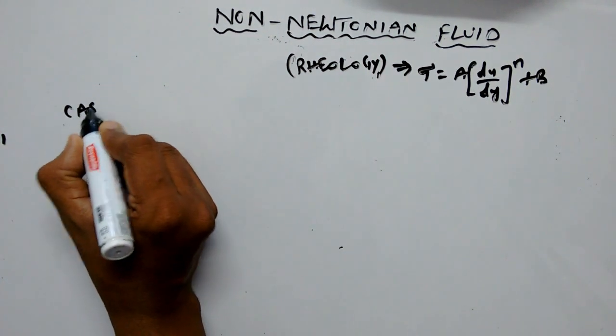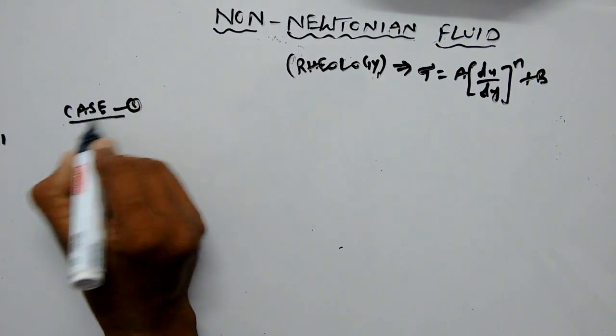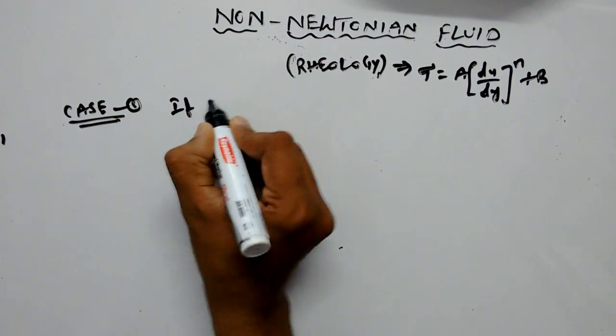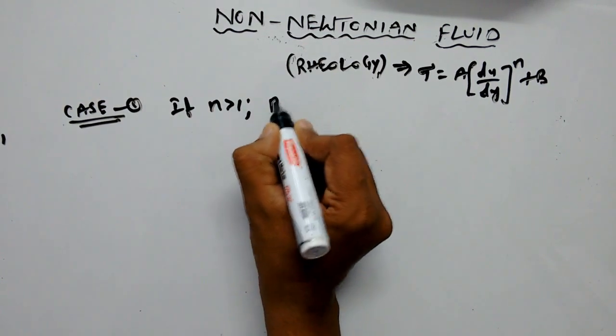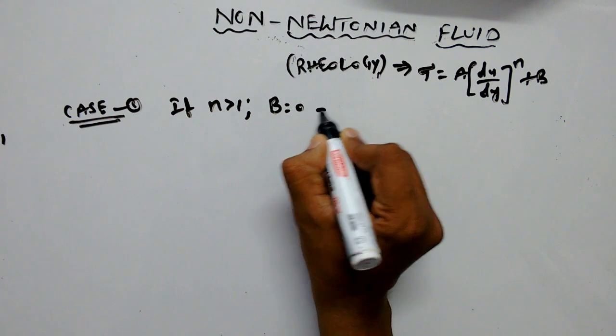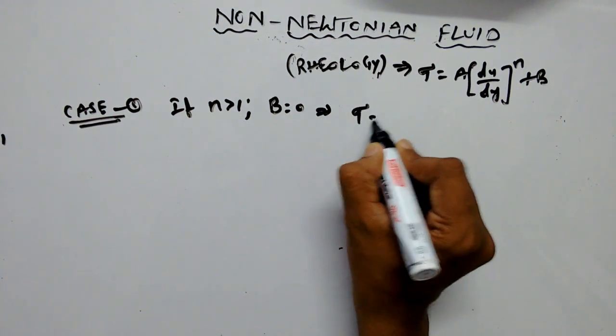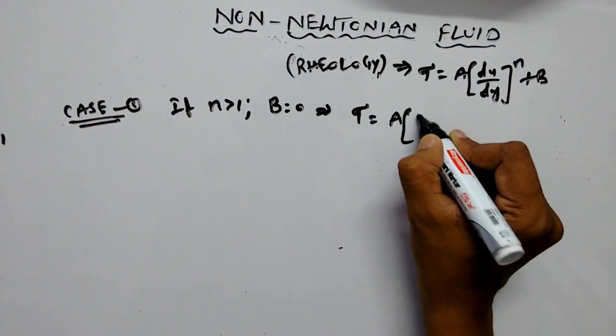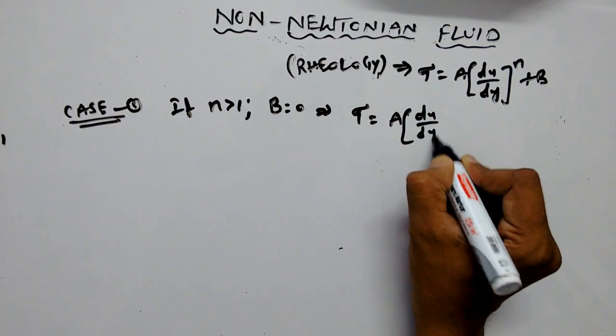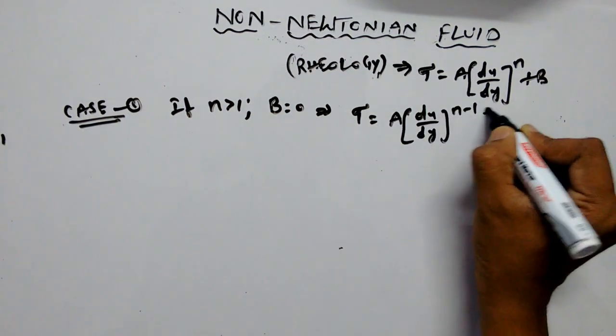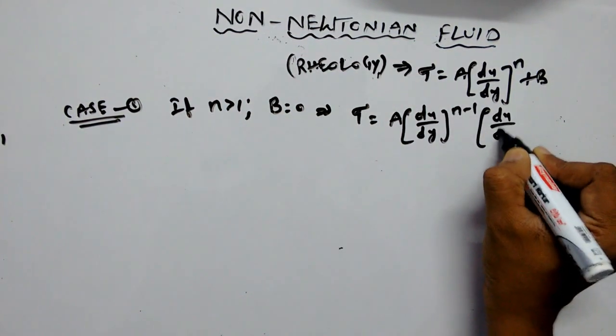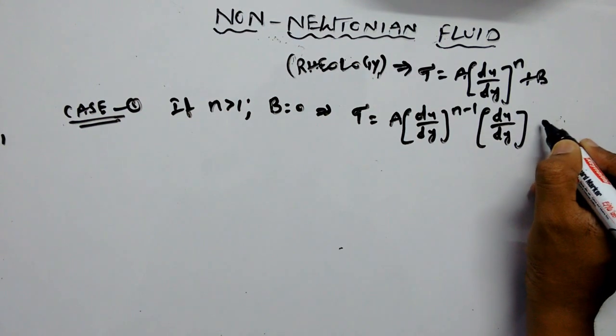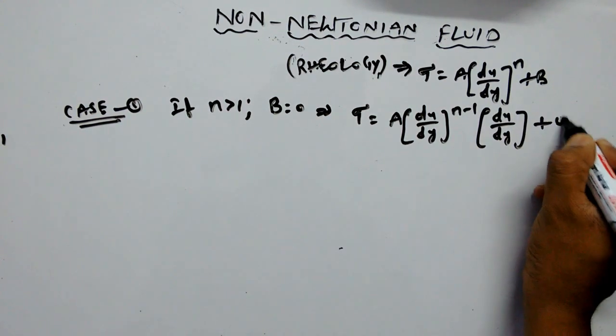Case number 1 is if n is greater than 1 and b equals 0. The equation can be written like this: tau equals a into du by dy whole power n minus 1 into du by dy plus 0.